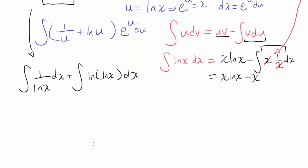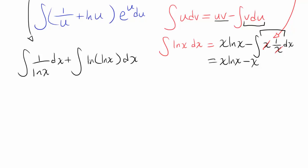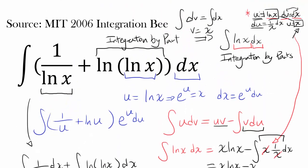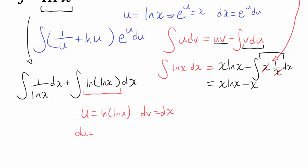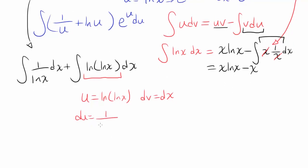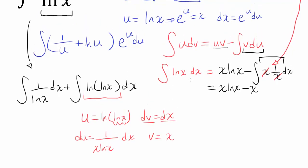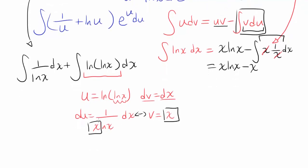Now let's focus on the integral of natural log of natural log of x dx. We let u equal natural log of natural log of x and dv equal dx. Differentiating u by the chain rule: the derivative of natural log of natural log of x is 1 over natural log of x times 1 over x, giving du equal to 1 over (x times natural log of x) dx. Integrating dv gives v equal to x. Notice that when computing v du, the x's cancel out, so we get 1 over natural log of x dx — and things are canceling out.